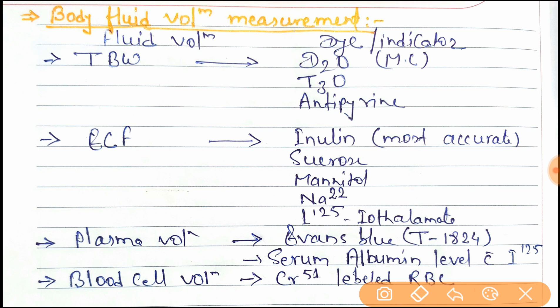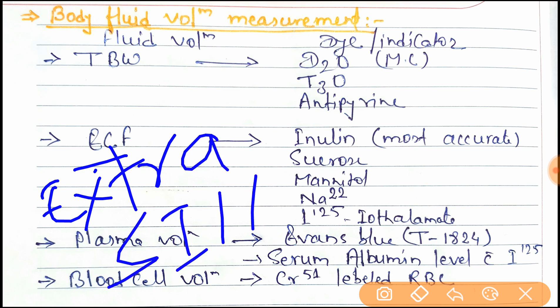Next is extracellular fluid. The trick is Extra SIM - S for sucrose, I for inulin or iodine, M for mannitol. Inulin is most accurate, giving exact measurement of the extracellular fluid.